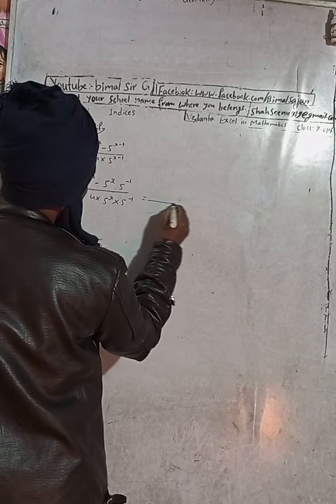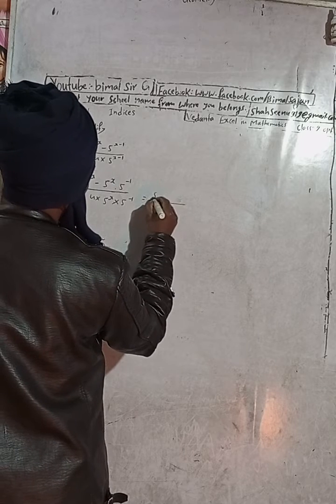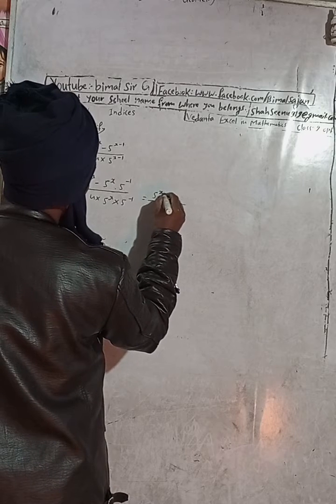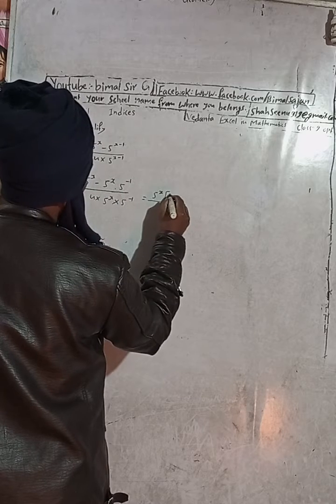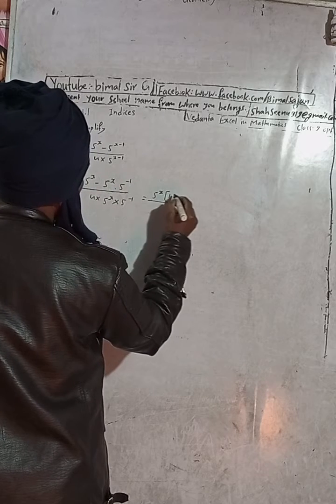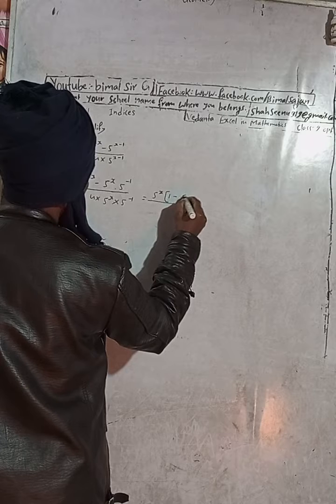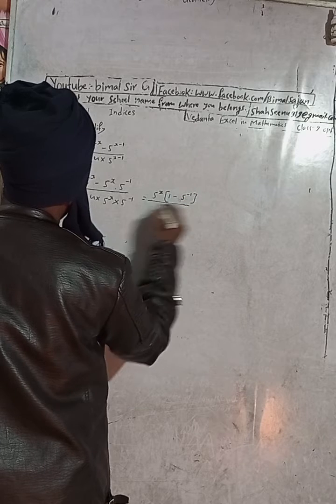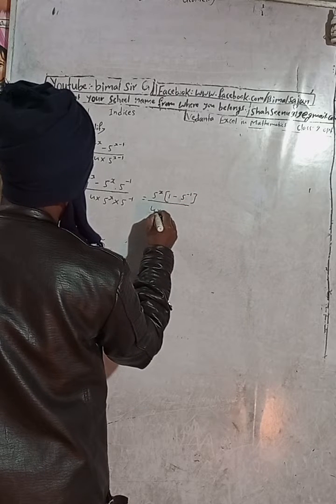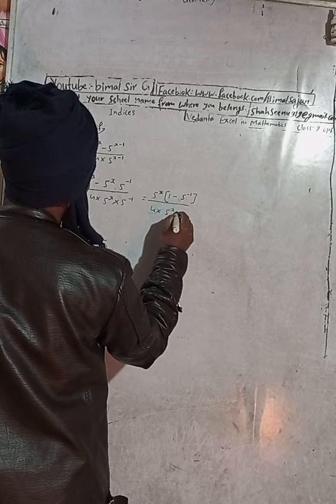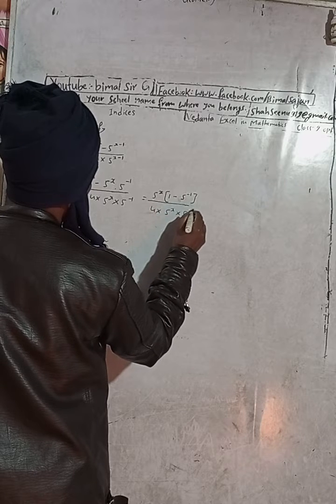Now here you can see, 5 to the power x, there is nothing means 1 minus 5 to the power minus 1, and this is 4 into 5 to the power x into 5 to the power minus 1.